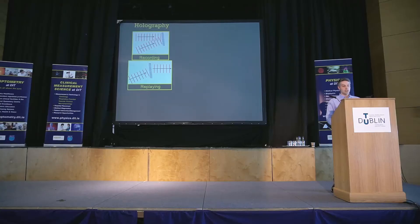This is done by encoding the interference pattern of two coherent beams — an object and reference beam — into a recording material. Then on replaying with one of the original beams, you can get the second beam back.